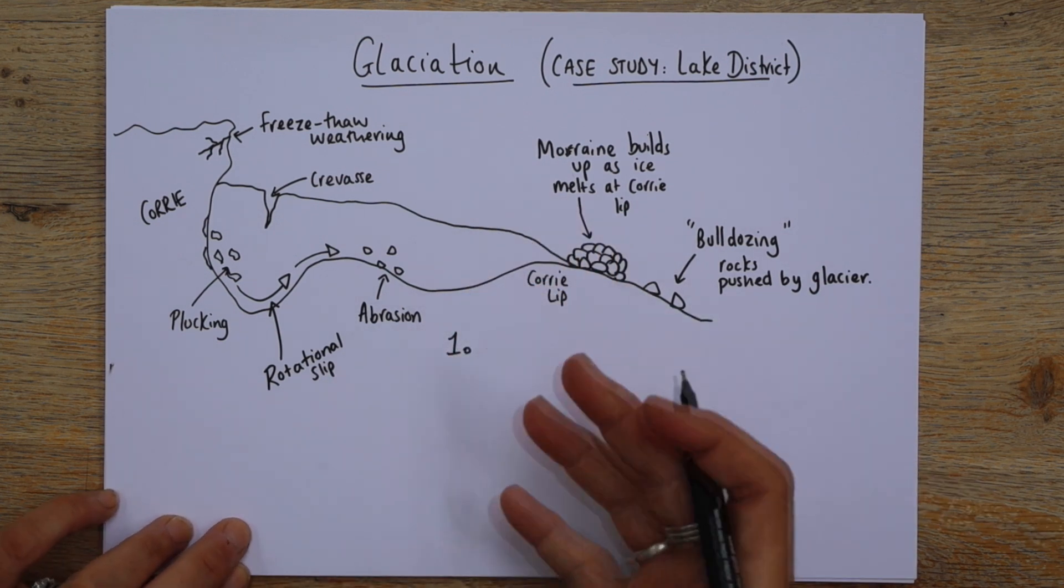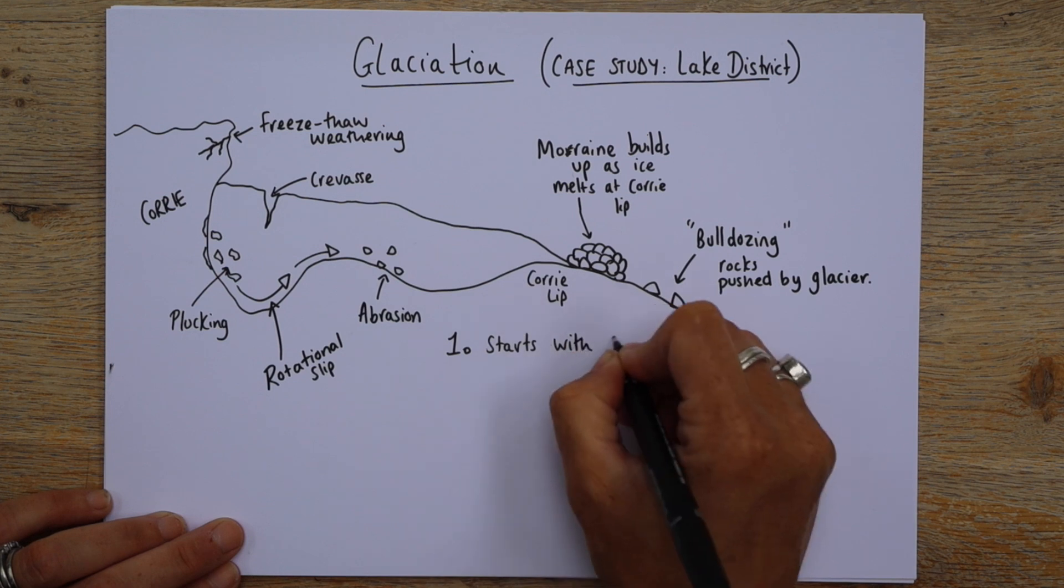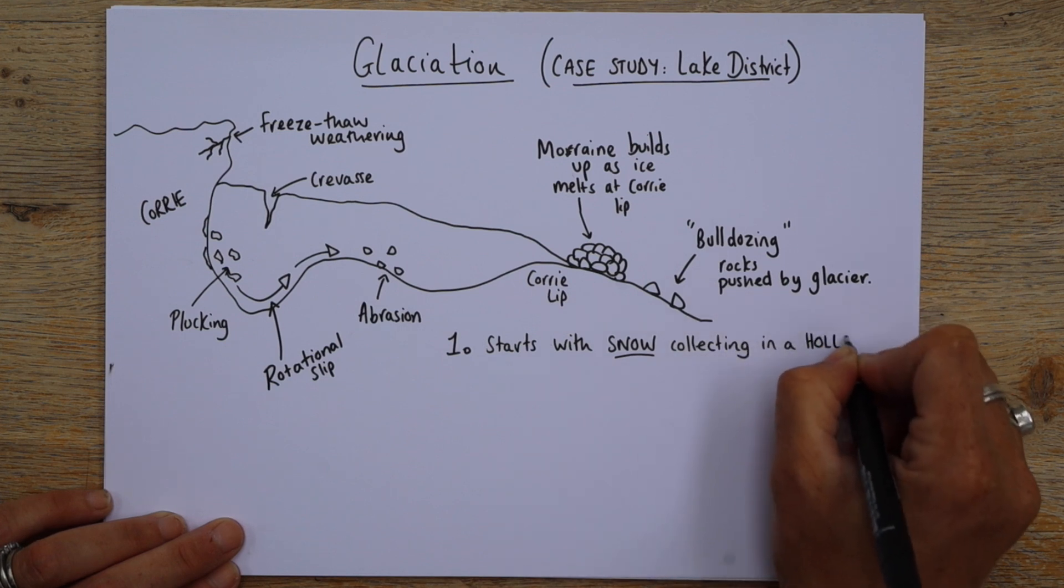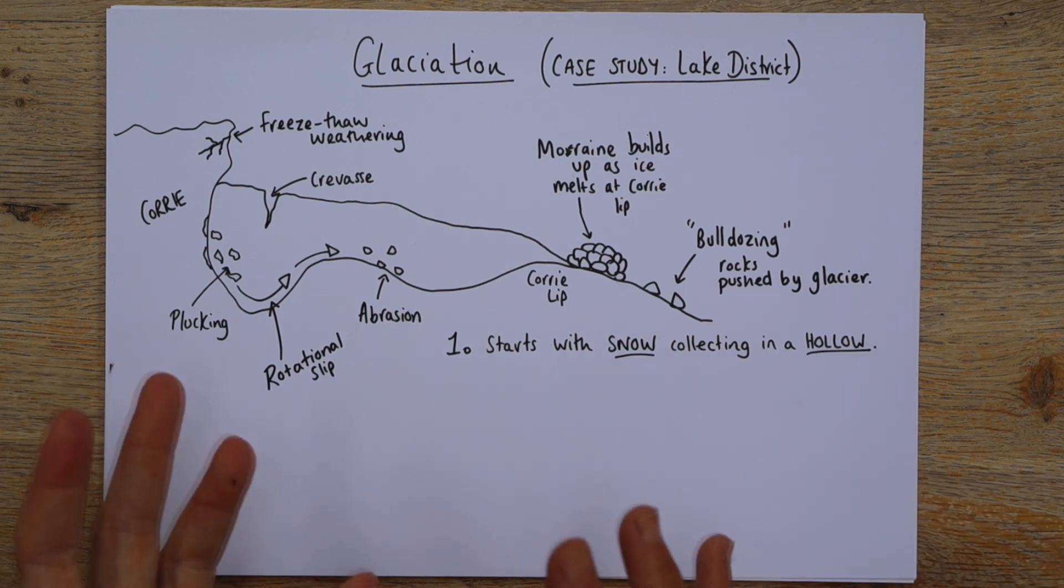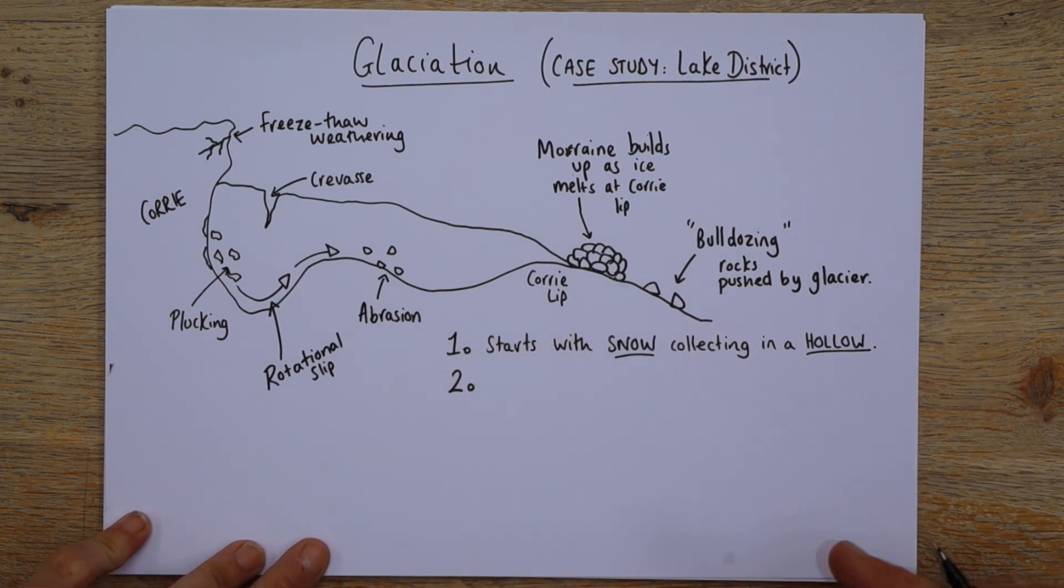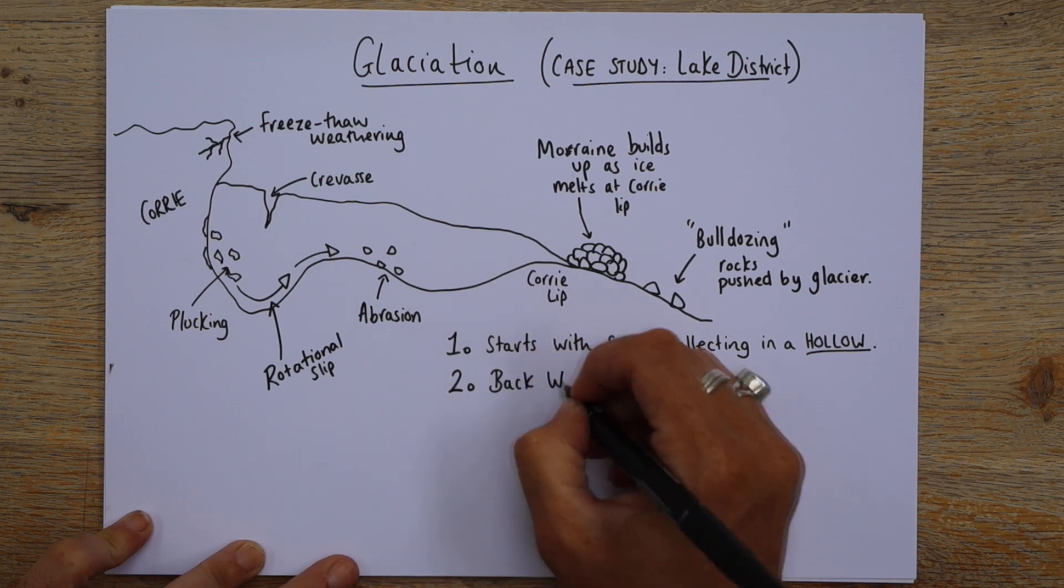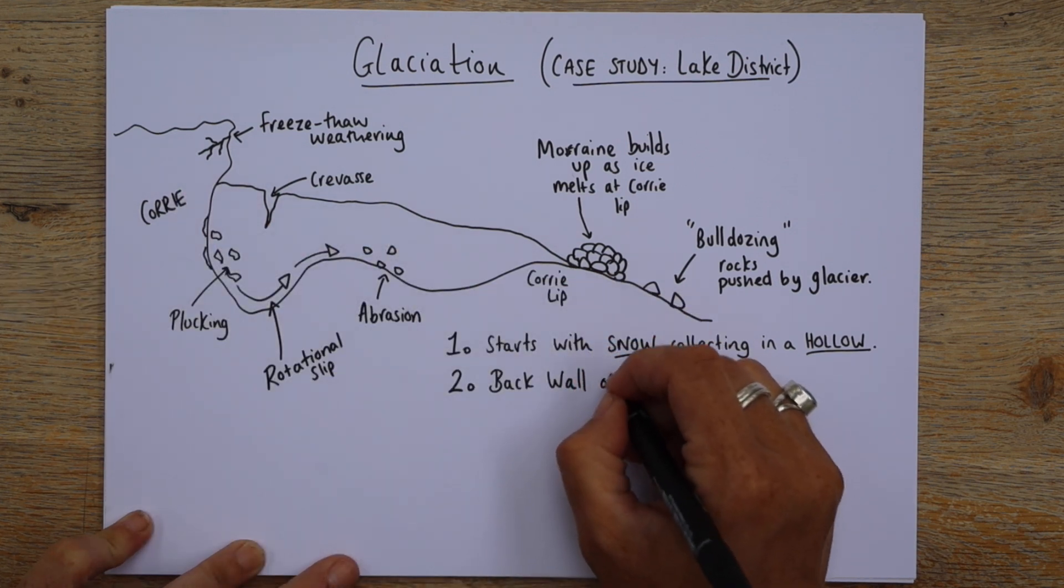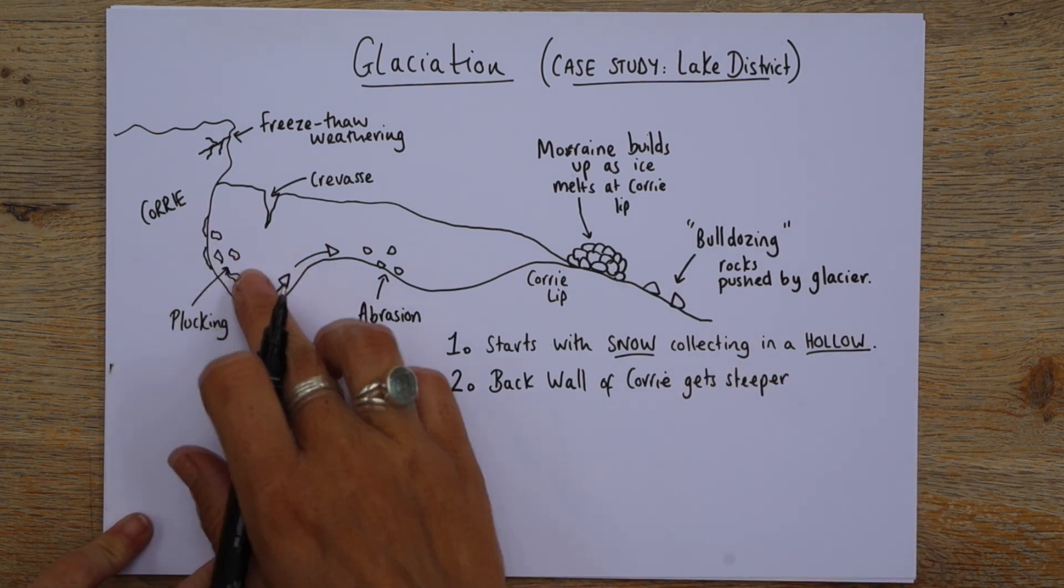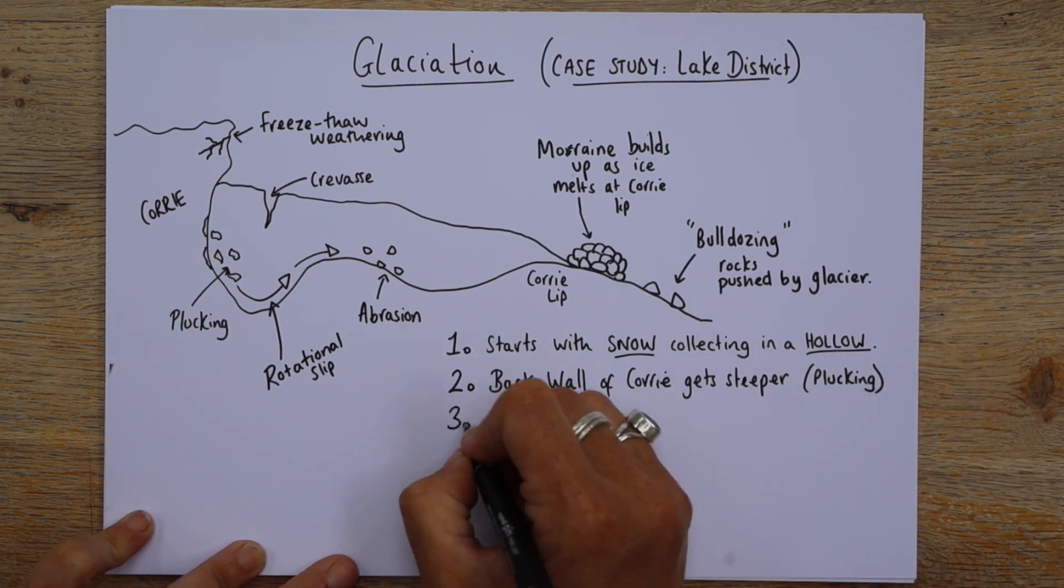Let me go through the process of a glacier forming. So how it starts through to how it finishes. So it starts with snow. Put that in capitals. And that's basically collecting. So lots of snow collecting in a hollow. I'll put that in capitals as well. Now these hollows are often on the north facing mountain sides in the UK. So that basically means that the snow doesn't melt. So it will last all summer and then it just gets added to in the winter. Then what happens is the back wall. This is the back wall. Okay. The back wall of the Cori gets steeper. And it gets steeper because of, as we talked about earlier, plucking and freeze-thaw weathering. I'll just put plucking there. Then, next, abrasion.